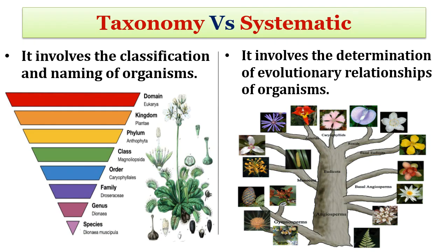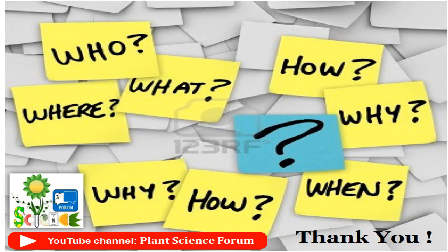While studying plant science, you will encounter two terms more frequently and sometimes interchangeably. Taxonomy involves the classification and naming of organisms, whereas systematics involves the determination of evolutionary relationships among organisms. This is a brief overview of various plant morphological characters and some key terms about taxonomy and systematics. If you like the video, please subscribe to the channel. Thank you.